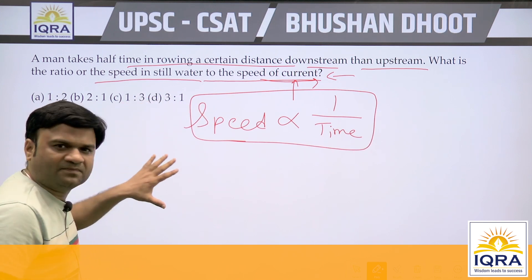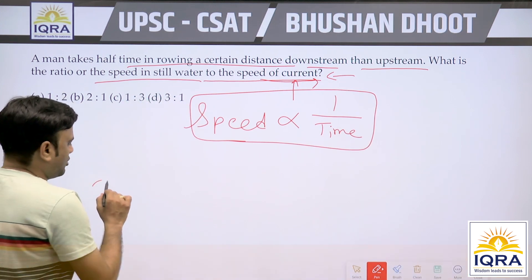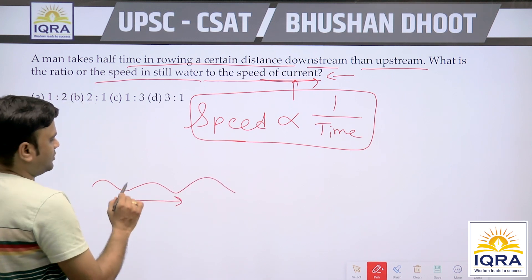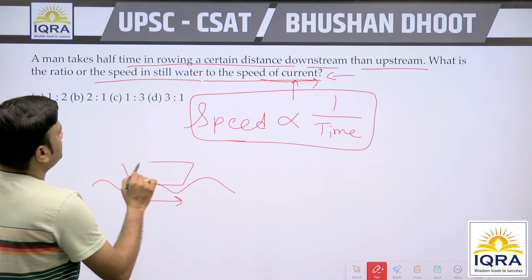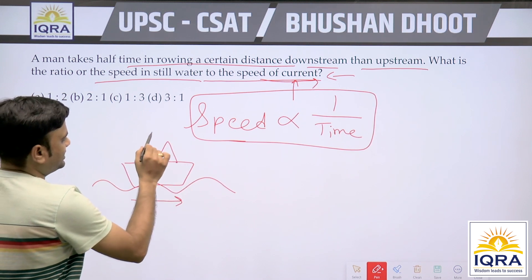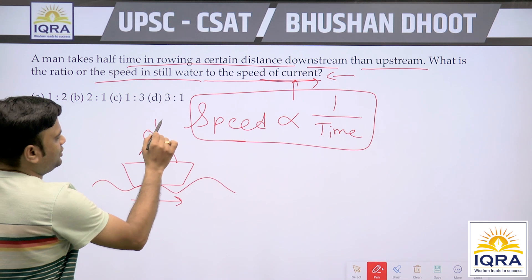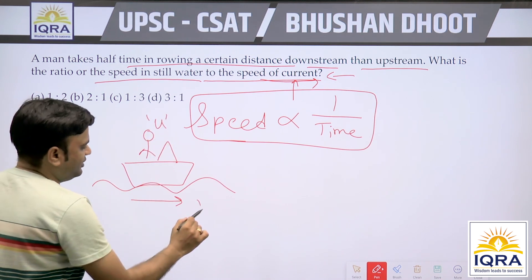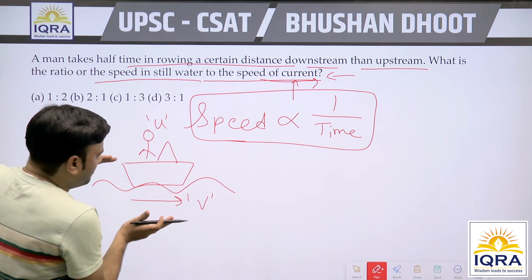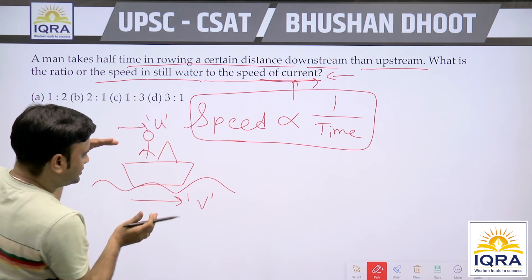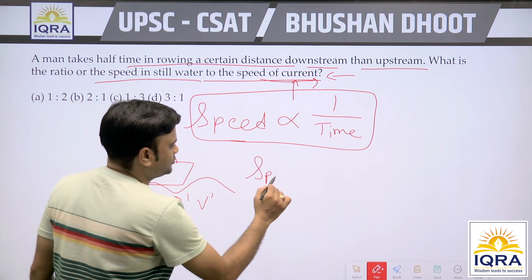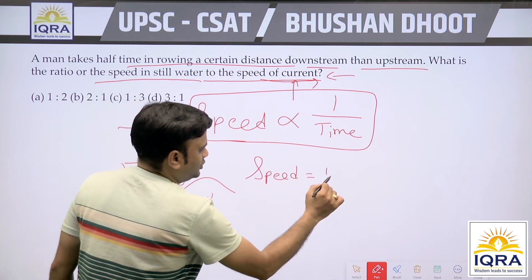So what is the concept of upstream and what is the concept of downstream? Suppose this is the stream and this is the person who is rowing. Let U be the speed of the person rowing and V be the speed of the stream. If the person is rowing with the stream, both speeds will add, so his relative speed will be U plus V.